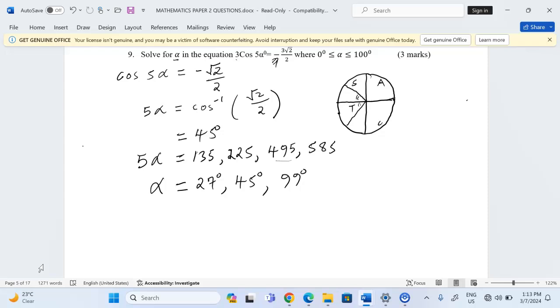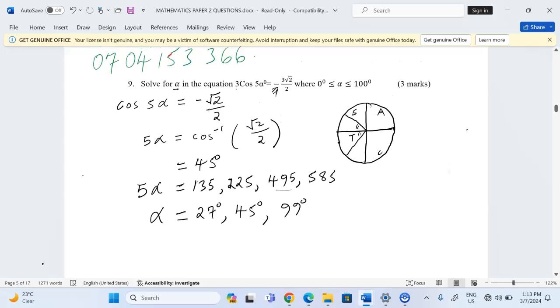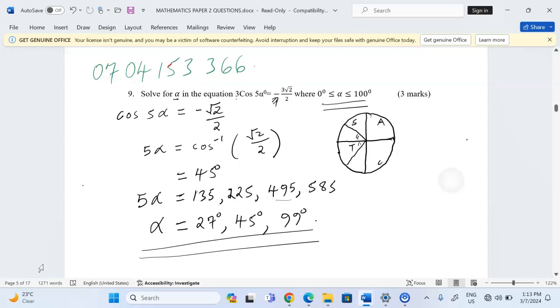Then when we take 585 out of 5, we are getting 117. And this will be beyond the range. Therefore, the three angles now are the most suitable or the only suitable for the above equation.